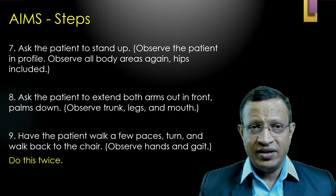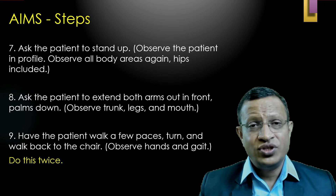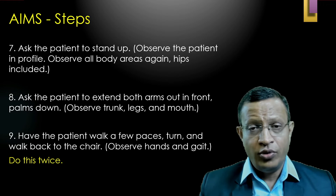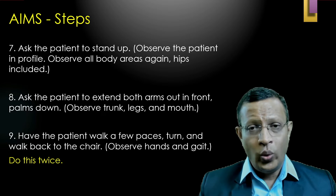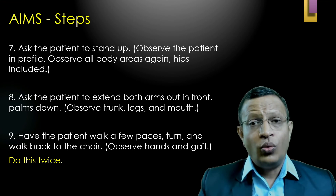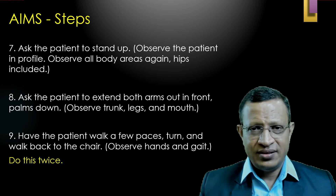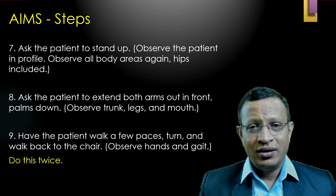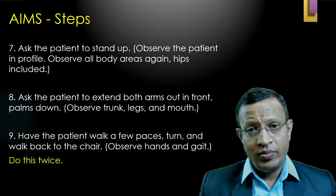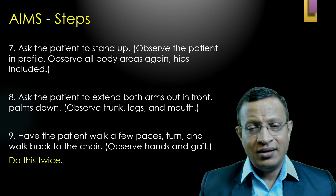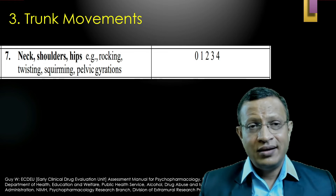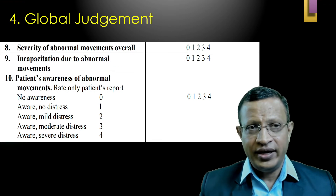Step seven: ask the patient to stand up and again observe from head to toe for any abnormal movements. Step eight: ask the patient to extend both arms with palms facing down and observe for any abnormal movements. Step nine: ask the patient to walk a few paces — approximately 10 meters up and down, twice. Observe for any problem in hand movement, bradykinesia, gait difficulties, or other abnormal movements. Repeat step nine twice. Also observe for neck, shoulder, and hip movement abnormalities.